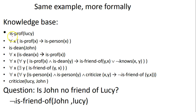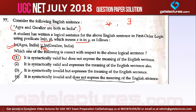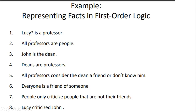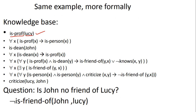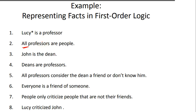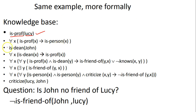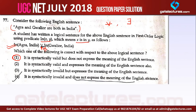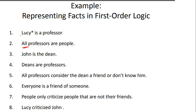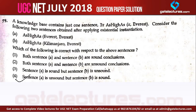For 'Lucy is a professor,' you can simply write Prof(Lucy). For 'All professors are people,' you write: for all x, if x is a professor then x is a person — quantifiers are optional in first order logic. For 'John is the dean,' simply write Dean(John). These are all syntactically valid formulas with no problem in their syntax.